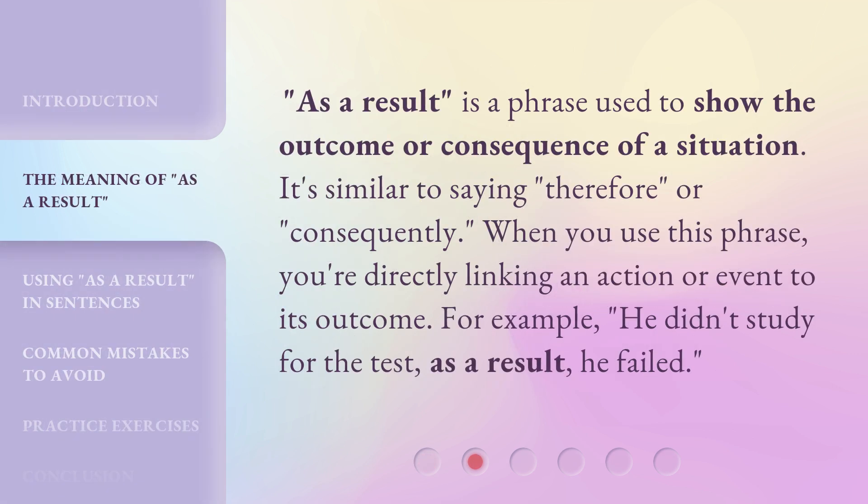'As a result' is a phrase used to show the outcome or consequence of a situation. It's similar to saying 'therefore' or 'consequently.' When you use this phrase, you're directly linking an action or event to its outcome. For example: he didn't study for the test. As a result, he failed.